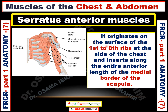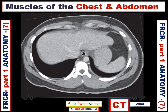The serratus anterior muscle originates from the surface of the first to eighth ribs at the side of the chest and inserts along the entire anterior length of the medial border of the scapula. Let us see it in the CT — this is a CT axial image, post-contrast study, as contrast is showing in the aorta and also in the hepatic veins in the portovenous phase. This arrow refers to the serratus anterior muscle on the left side.